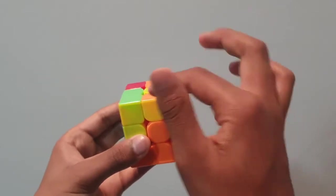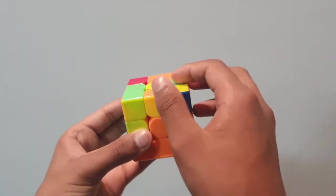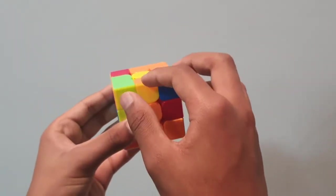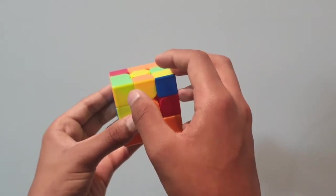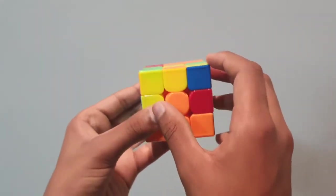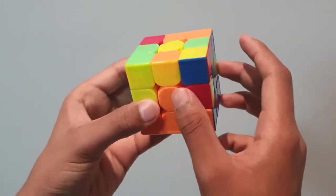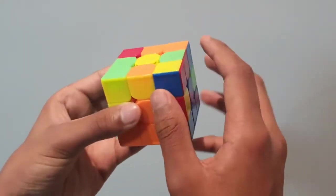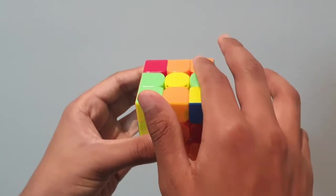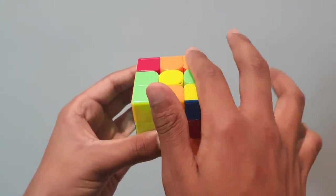First, we have to look around the top layer of the Rubik's Cube. We have to look for any edge pieces which do not have yellow on them. For example, we cannot use pieces like this one, because it has yellow. And even if the yellow were on top, we still couldn't use it. Because at the end of the day, we're trying to create a yellow face on top of the cube.